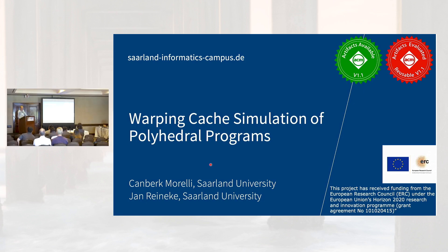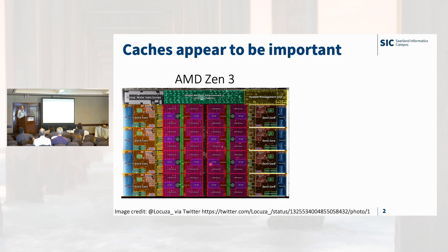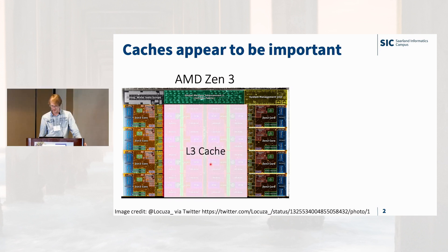I will be talking about warping cache simulation of polyhedral programs. I'm sure everybody knows that caches are important, but let me give you another example, or illustration, that that is actually the case.